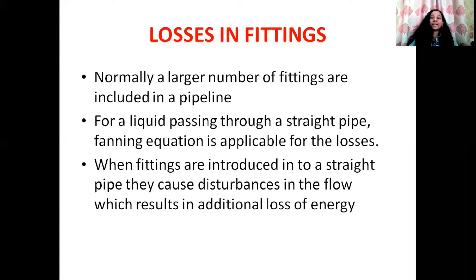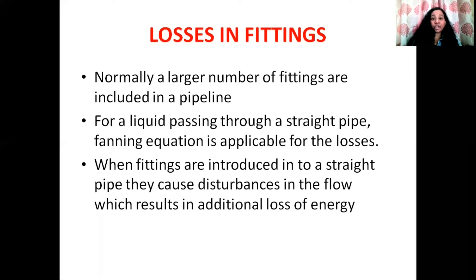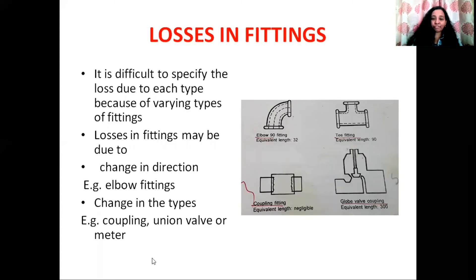Normally, a larger number of fittings are included in a pipeline. When a liquid is flowing through a straight pipeline, the fanning equation can be used to calculate the pressure drop due to friction. When fittings are introduced into a straight pipeline, they create disturbances that result in additional loss of energy. Different types of fittings include elbow fitting, T-fitting, coupling fitting, and globe valve fitting.